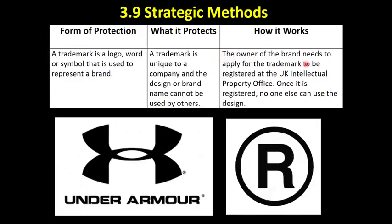So how does it work? You need to apply for a trademark at the UK Intellectual Property Office. Once that trademark is registered, you get the little R symbol to put next to it, and nobody else can then use that design — you are legally protected against that.